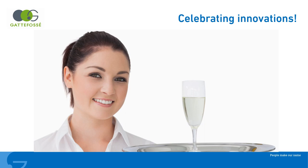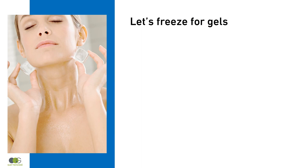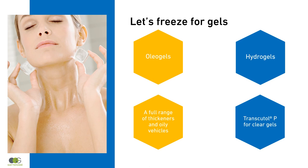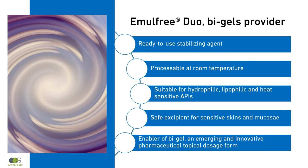Find out innovation opportunities for your topical dosage forms. Gels are also very popular. Oleogels are obtained by adding thickeners to oily vehicles. Transparent hydrogels are obtained with Transcutol P, whatever its concentration and the gelling agent used. Are you aware of bi-gels? Bi-gels consist of an intimate mixture of an aqueous and an oily gel, with many benefits. Emul-Free Duo is a ready-to-use stabilizing agent, ideal for bi-gel production.